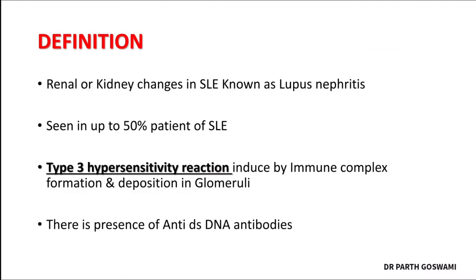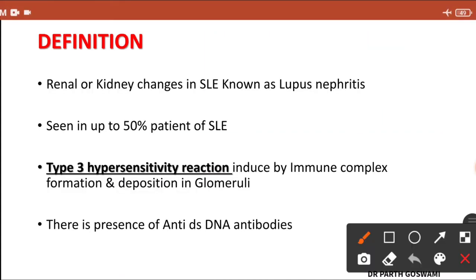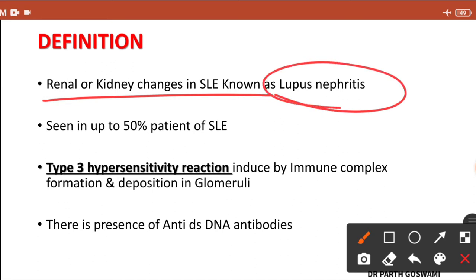So simply, lupus nephritis is the kidney change in systemic lupus erythematosus. You might be surprised that in SLE patients, 50% will have kidney involvement.